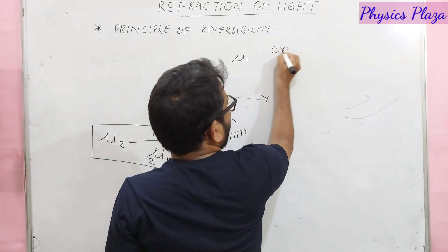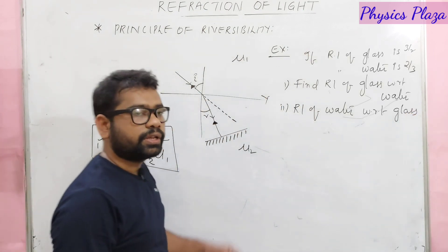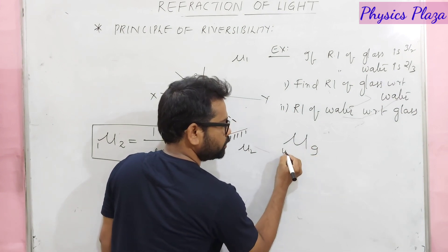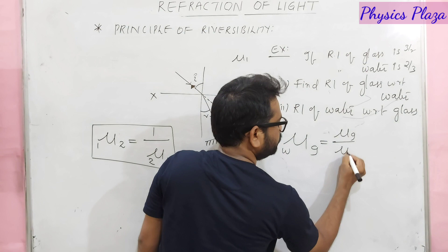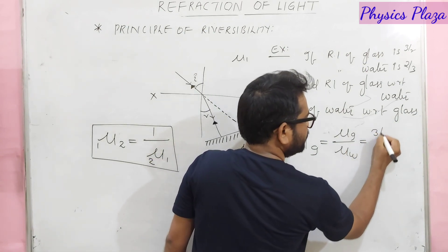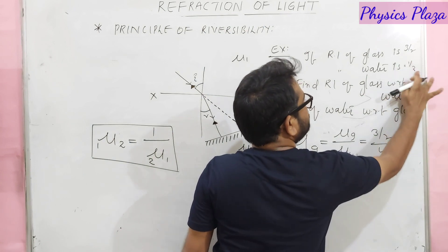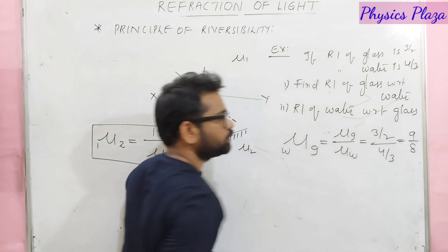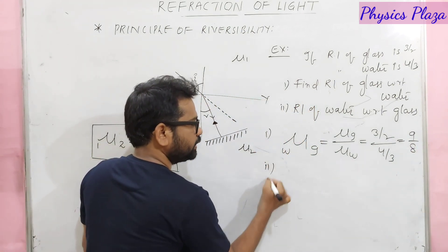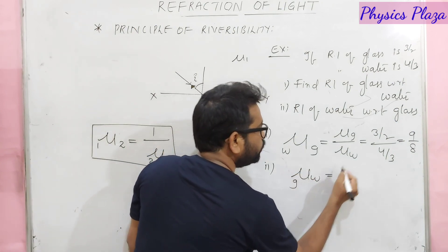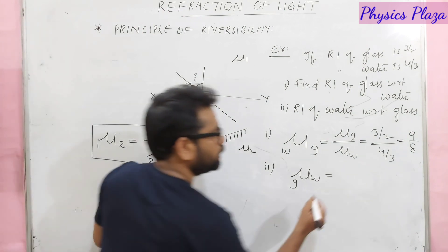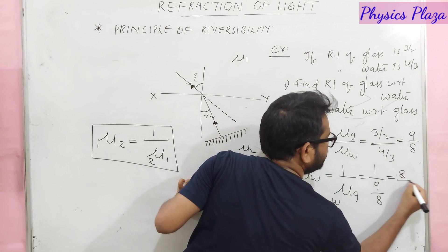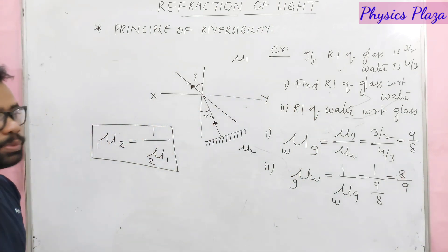Example using principle of reversibility: given μ_glass = 3/2, μ_water = 4/3. Refractive index of glass with respect to water = μ_glass / μ_water = (3/2) / (4/3) = 9/8. Refractive index of water with respect to glass, by principle of reversibility, is the reciprocal = 8/9. These are the types of numericals we can expect.